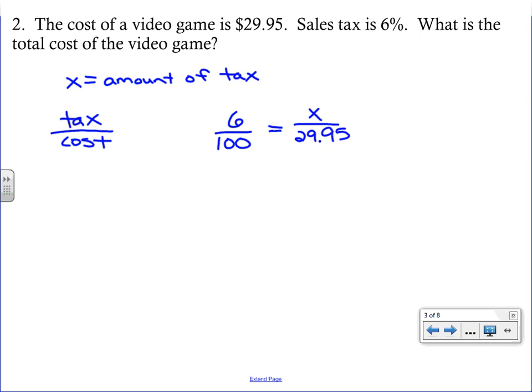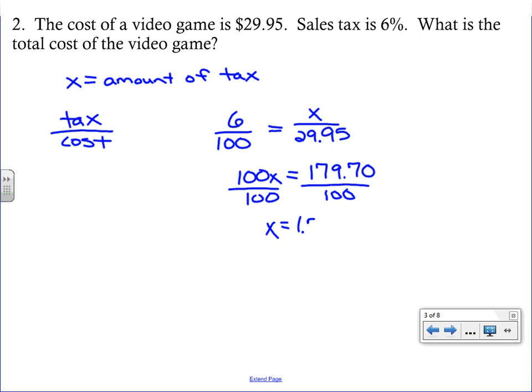Press pause and solve this proportion. After cross multiplying and dividing, you get x equals 1.797.